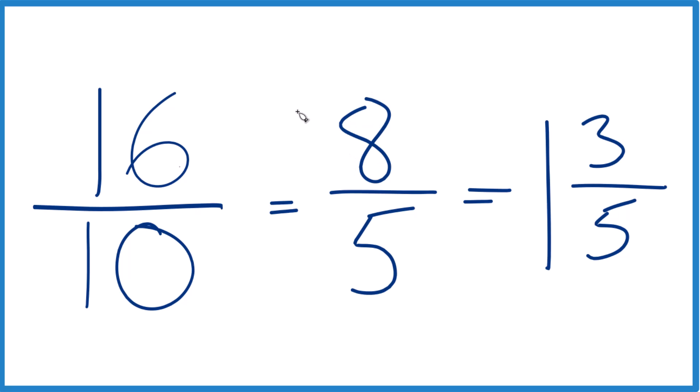So the fraction 16 tenths equals the improper fraction 8 fifths, and the mixed number 1 and 3 fifths.